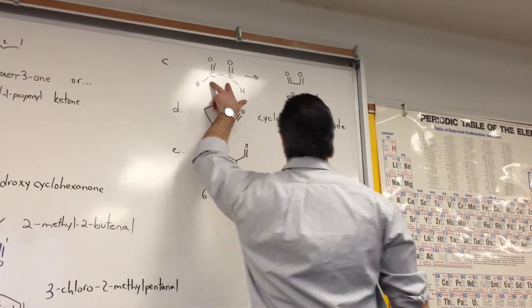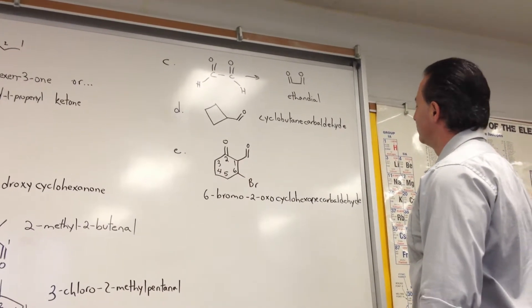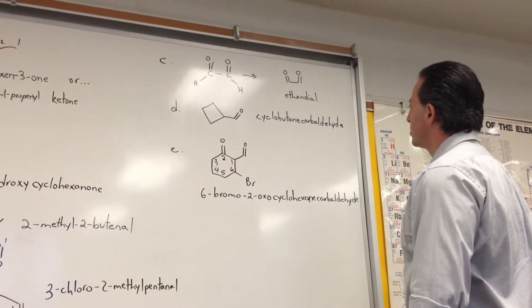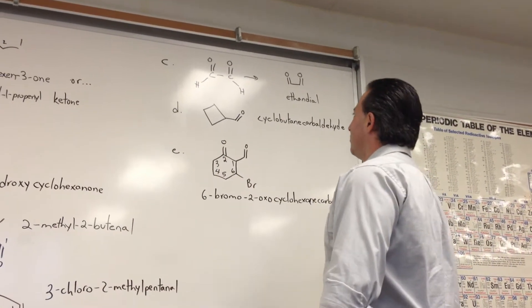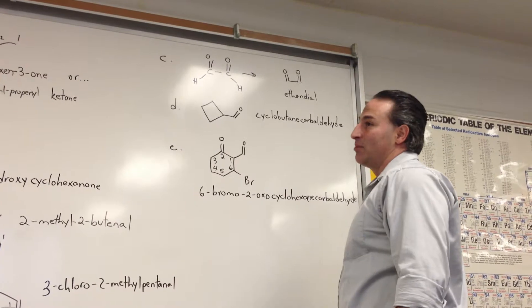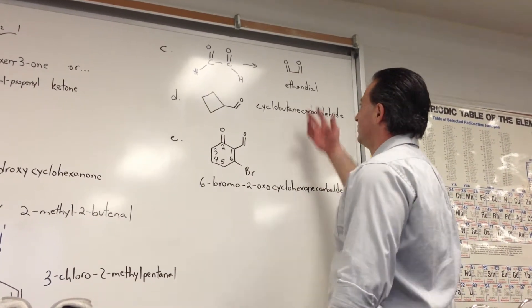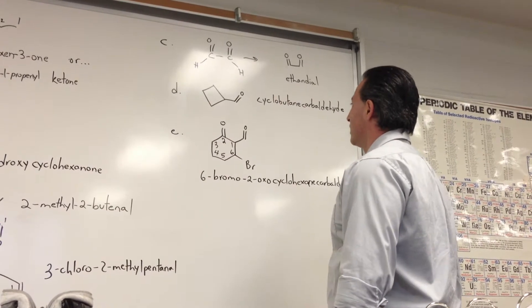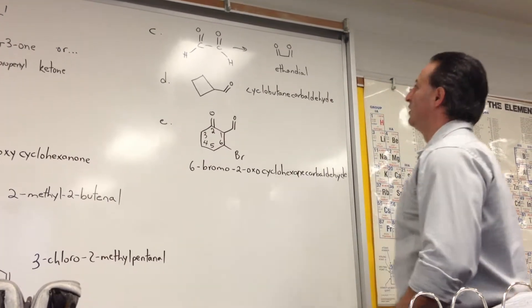This is a 2-carbon chain with 2 aldehyde groups. You could call it 1,2-ethanedial, but there's no need to put the number in because the only way the molecule can be drawn is this way. So it's superfluous to write the number, so you can call it simply ethanedial.